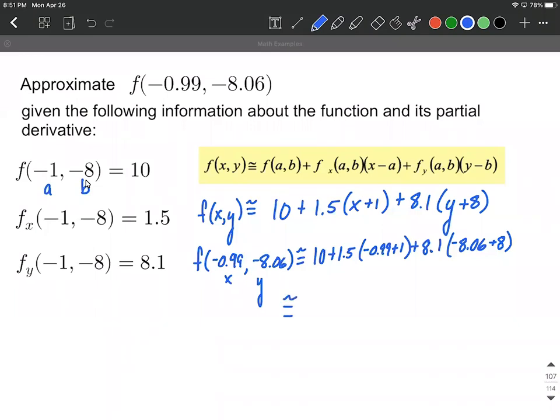We could reduce this down a little bit. This is 10 plus 1.5 multiplied by 0.01, plus 8.1 multiplied by negative 0.06. Then get this into our calculators and go ahead and get an approximation for this. I got this to be 9.529 as my approximation.